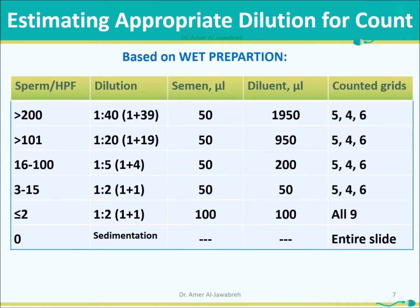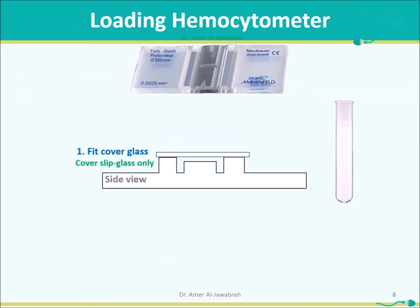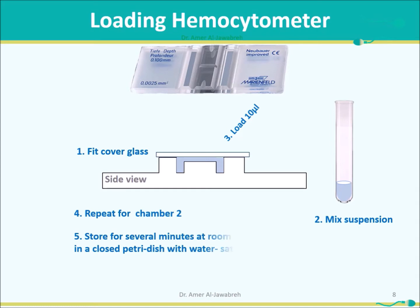Use this table to estimate appropriate dilution for the count based on the wet preparation. Do not use less than 50 µL of semen to reduce sampling error. When loading the hemocytometer, fit the cover glass — do not use plastic cover slips. Mix suspension well, then load 10 µL. Repeat for chamber 2. Store for several minutes at room temperature in a closed petri dish with water-saturated tissue to allow sedimentation and settling of sperms.